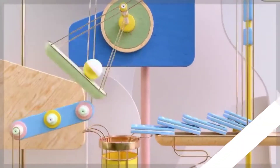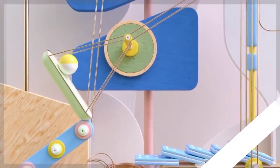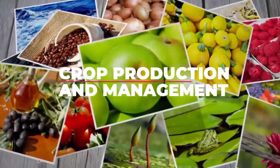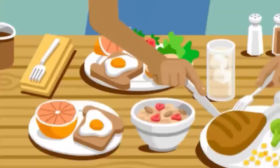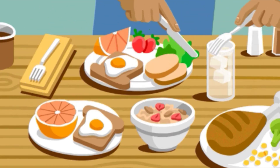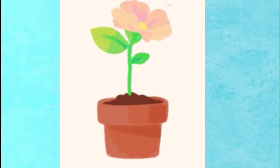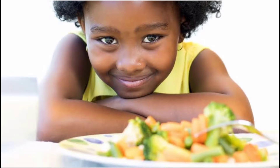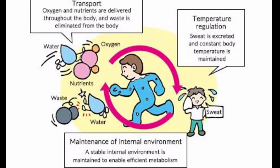Greetings of the day, dear students. Welcome to science class. Today we are beginning with our first biology chapter: Crop Production and Management. As you know, children, all living organisms need food for their growth and survival. We get our food from both plants and animals. Food is required for the growth and maintenance of the body.